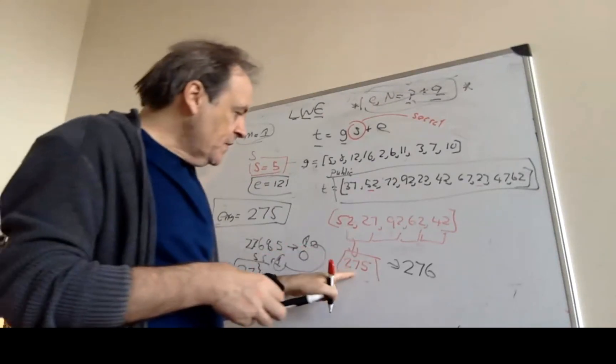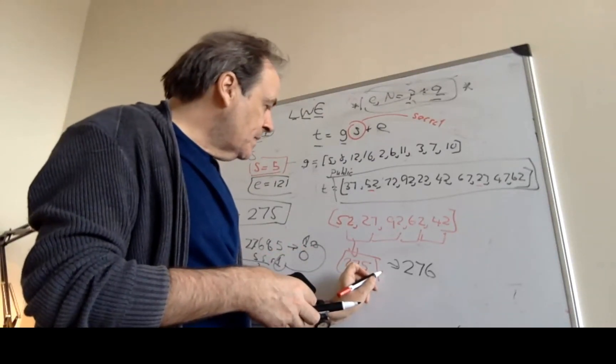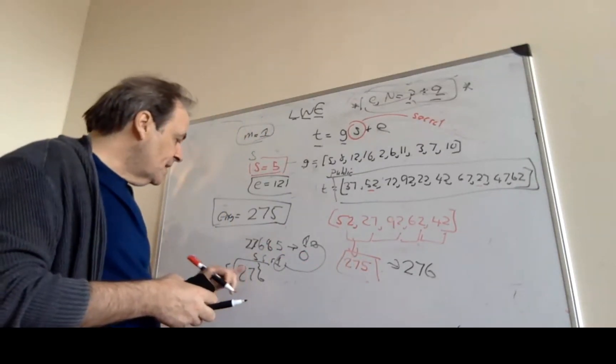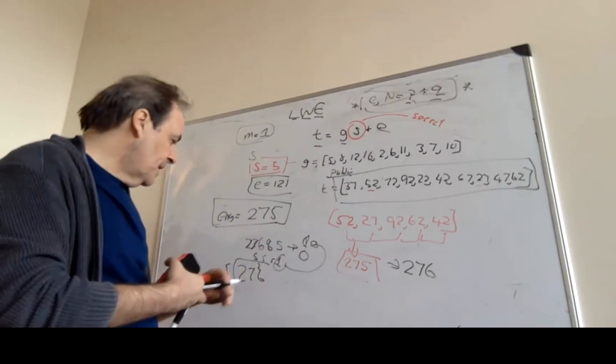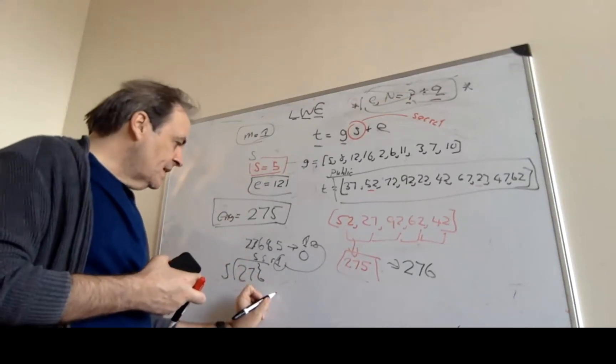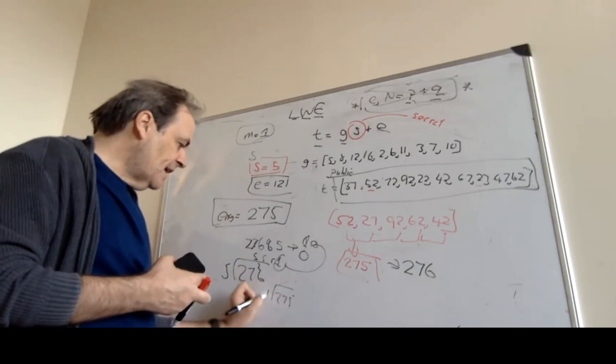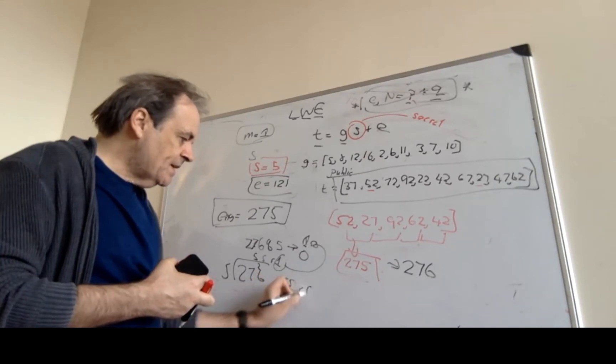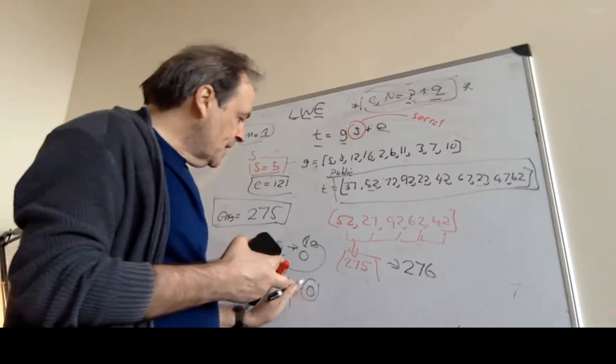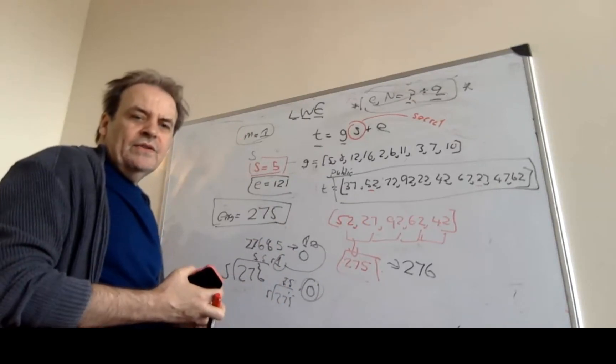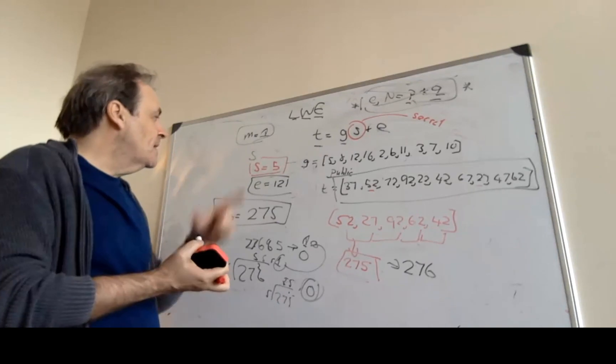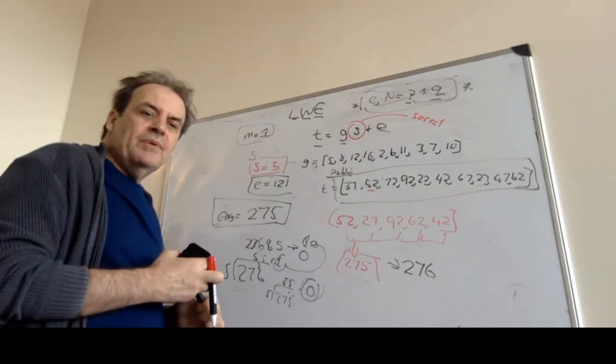If the value had been a 0, then we would have just sent 275. When we divide 275 by 5, our secret, then that is 55 remainder 0. So in this way we can actually determine the result of it by keeping our secret value, our private key.